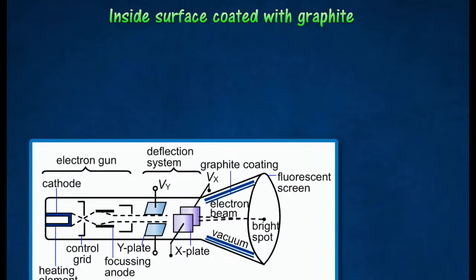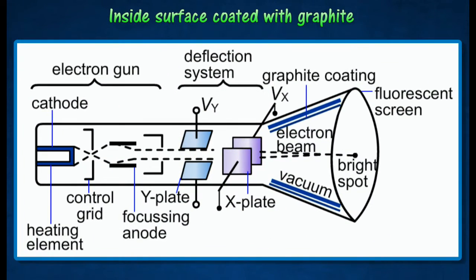The diagram shows the basic structure of a cathode-ray oscilloscope. It works on the principle of deflection of an electron beam by an electric field. Cathode-ray oscilloscope consists of an evacuated glass tube containing three main components: an electron gun, a deflection system, and a fluorescent screen.